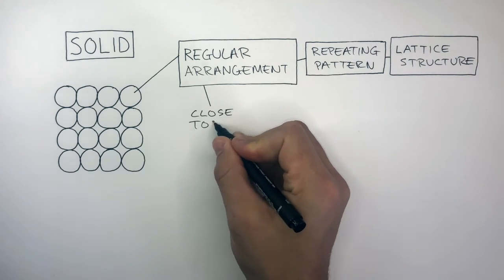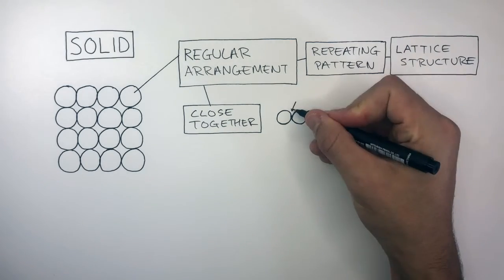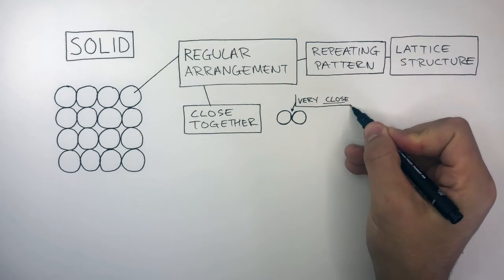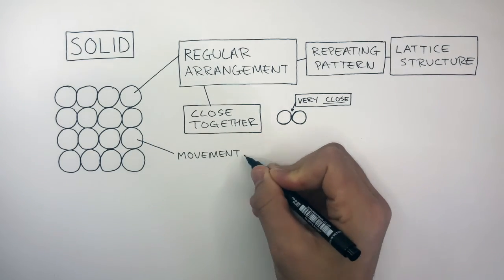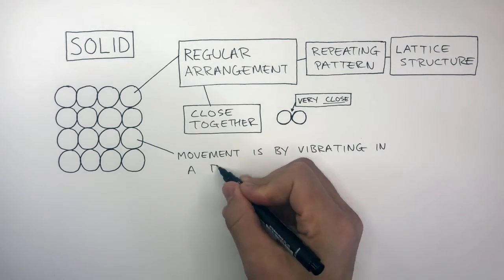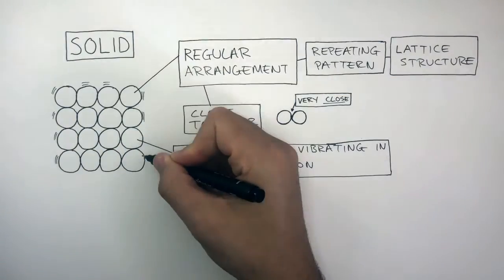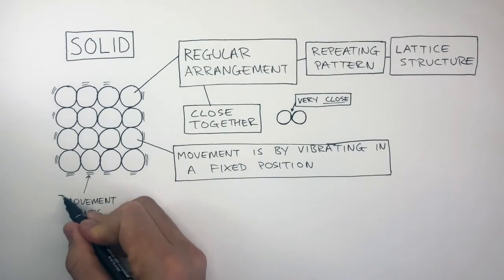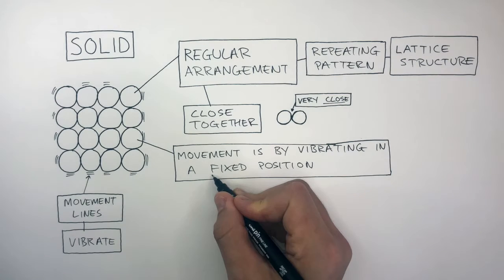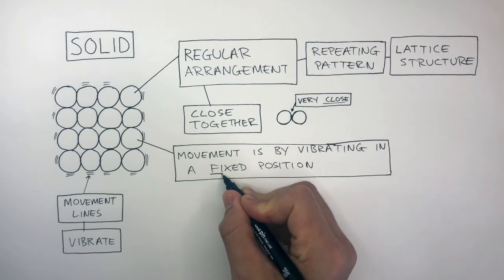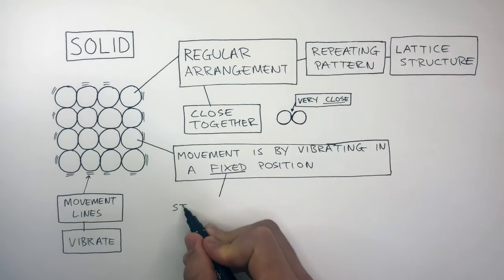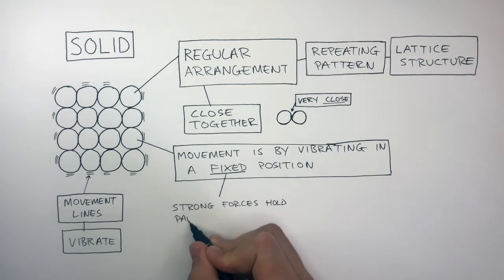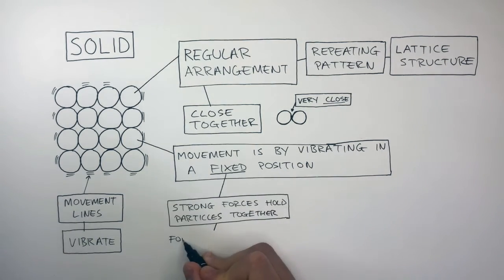The particles are close together and cannot be pushed any closer. In solids, the movement is by vibrating in a fixed position. The movement lines around the particles show how the particles are vibrating. The word fixed means particles cannot freely move, because there are strong forces holding the particles together.